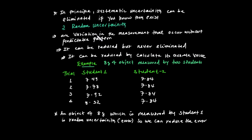For example, if the true value of an object is 10 kg but measurements vary — say 10,000 then 9,000 — that is random uncertainty. Random uncertainty can be reduced, but not eliminated. It can be reduced by calculating the average of multiple measurements.